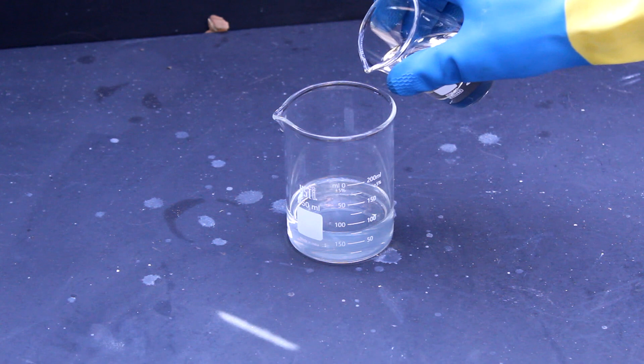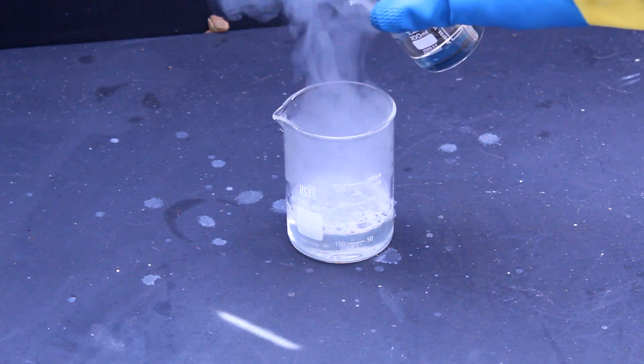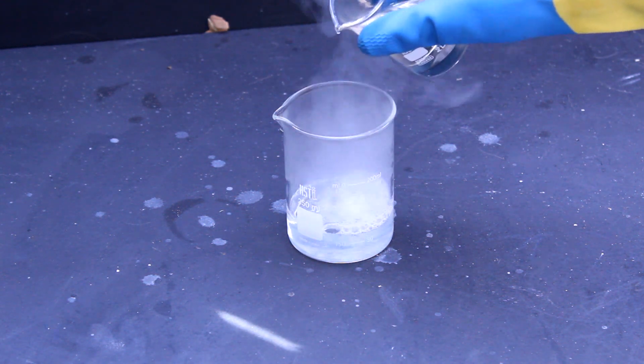As the acid is added to the sodium silicate, some carbon dioxide might bubble out, since some of the sodium hydroxide tends to absorb carbon dioxide, forming sodium carbonate.